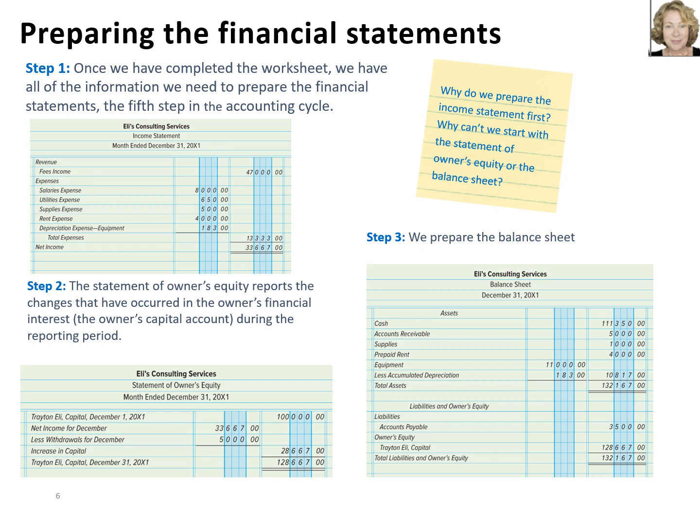Now we're ready to prepare the balance sheet. Transfer all other amounts from the balance sheet columns of the worksheet to the balance sheet, listing the assets first and then the liabilities. Transfer the owner's equity information from the statement of owner's equity. We're done, except one item is still left: recording and posting the adjusting journal entries. Watch the next video to learn more.